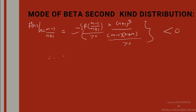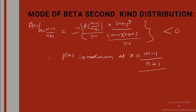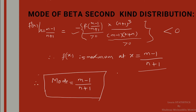Therefore, the PDF f(x) is maximum at x = (m-1)/(n+1). Hence this value is the mode. Therefore, mode = (m-1) / (n+1). The mode of the beta second kind distribution is (m-1)/(n+1).